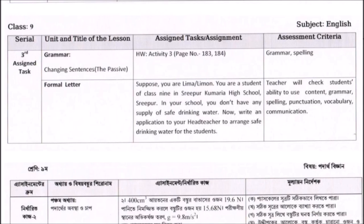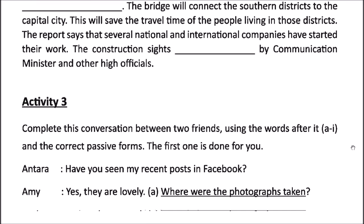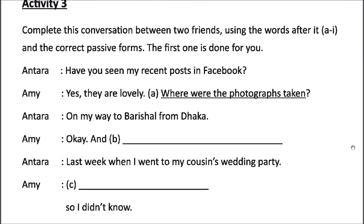Looking at the assessment criteria, the teacher will check students' ability to use content, grammar, spelling, punctuation, vocabulary, and communication. Now we will see Activity 3 on page number 183 and 184 from the government English grammar and composition book. Here is page number 183, and you can see Activity 3.